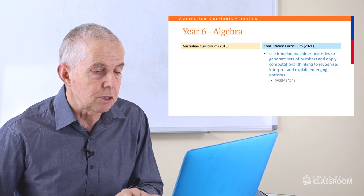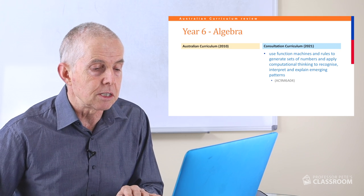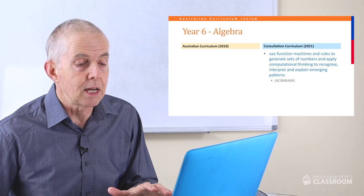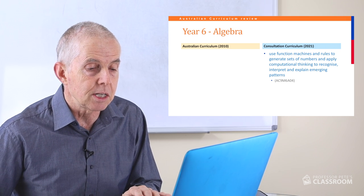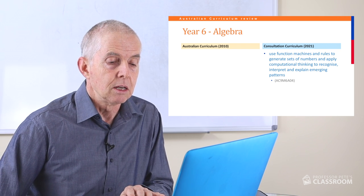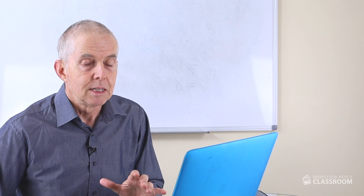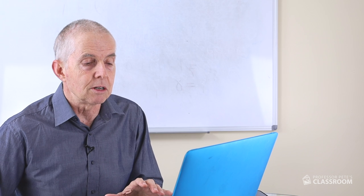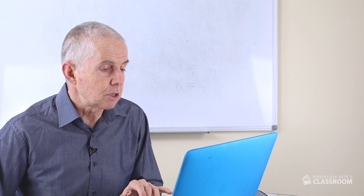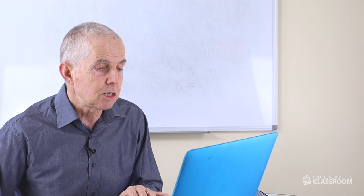The fourth algebra content descriptor, the final one, is completely new — it didn't exist in the old curriculum. Use function machines — that's the first time we've heard of that, and I think it's appropriate for year six — and rules to generate sets of numbers and apply computational thinking to recognise, interpret, and explain emerging patterns. This is a great introduction to the idea of functions prior to students going into high school, so I think that's a great addition to the curriculum.